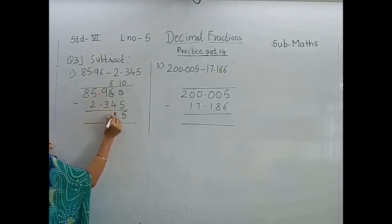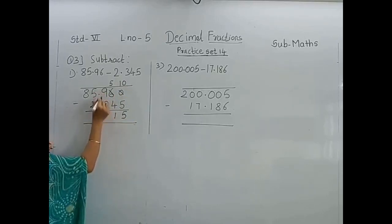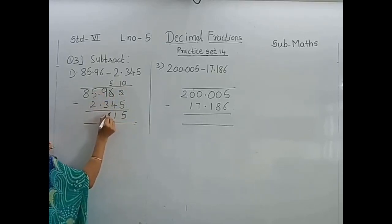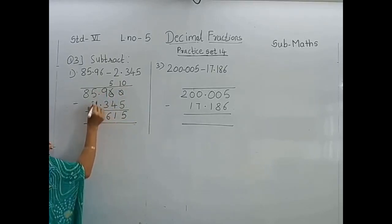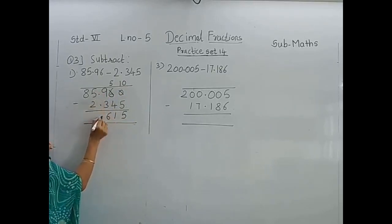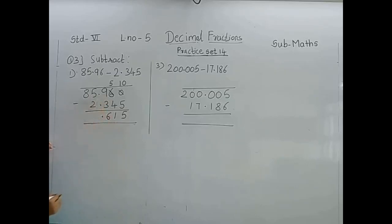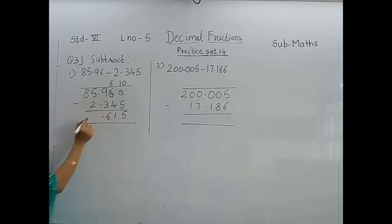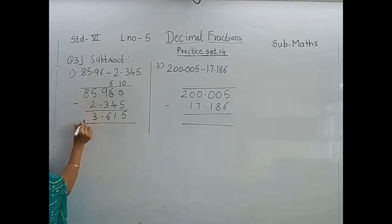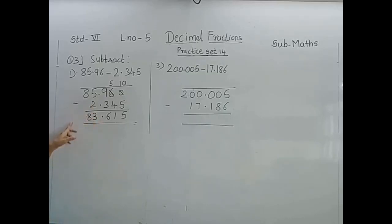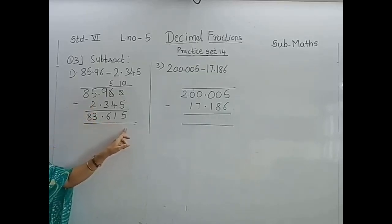5 minus 4 is 1. 9 minus 3 is 6. Put the decimal point. 5 minus 2 is 3. Bring down 8 and 0. So the answer is 83.615.